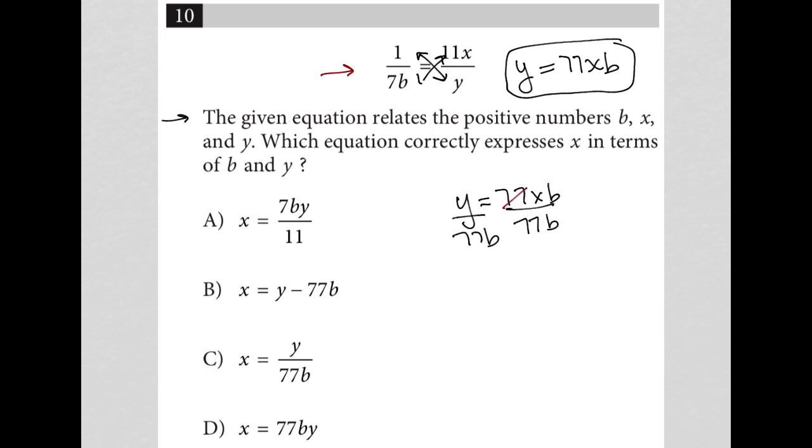Doing that allows me to cross out 77 on this side, also cross out b on this side, and I'm left with y over 77b is equal to x.